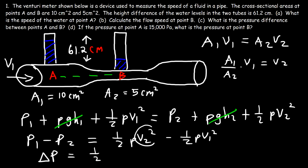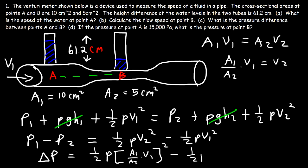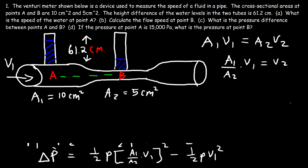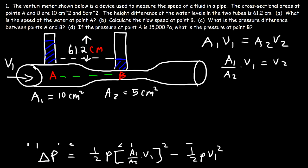We replace V2 squared with that expression: ½ρ(A1/A2 · V1)² - ½ρV1². Now the difference in pressure at points A and B is proportional to the height difference between the two water levels. The pressure exerted by that extra fluid relative to the lower level equals delta P, and the pressure due to the weight of a fluid is ρgh. So we can replace delta P with ρgh.